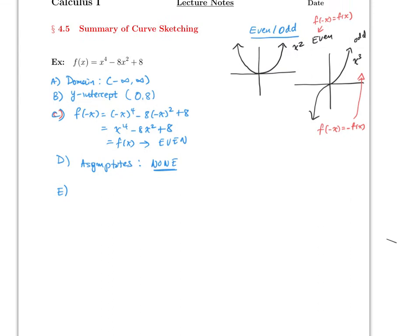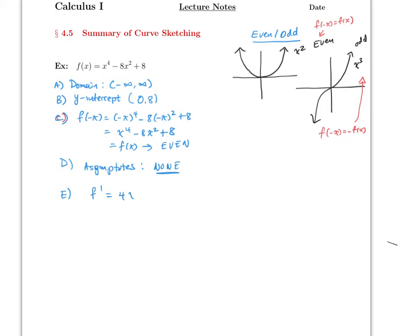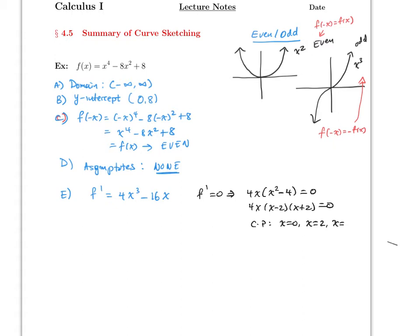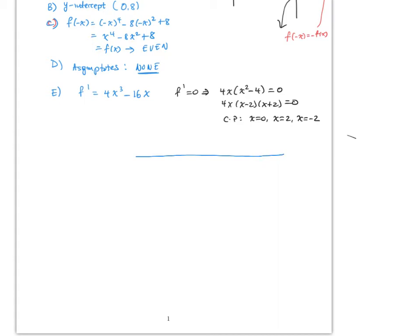Now for part E, we need to find where the function is increasing and decreasing, so first we find the critical points. The derivative f′ is 4x³ − 16x. To find the critical points, set f′ = 0, which factors as 4x(x² − 4) = 0, or 4x(x − 2)(x + 2) = 0. Therefore the critical points are x = 0, x = 2, and x = −2. At these points the slope is zero, meaning the line is flat.